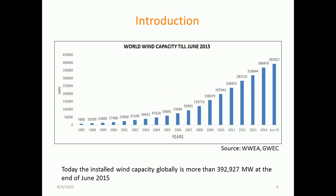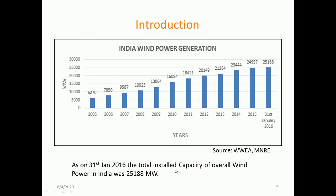You can see the bar graph of world wind capacity from 1997 to 2015. You can observe that in the initial year of 1997 the installed capacity was 7,600 MW. The global capacity has grown to almost 3,92,927 MW as of June 2015. India's installed wind capacity has also raised from 2005 to almost 25,188 MW by 2016.